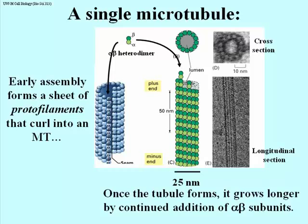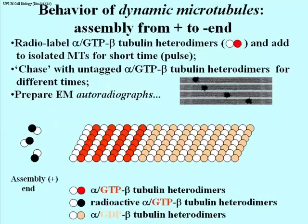Remember that these alpha-beta subunits are adding as alpha-GTP-beta subunits. This growth by addition to the plus end eventually results in GTP hydrolysis. In this experiment, the alpha-beta tubulins were made radioactive — indicated by the black and white balls — to represent radioactive alpha-GTP-bound beta-tubulin heterodimers.